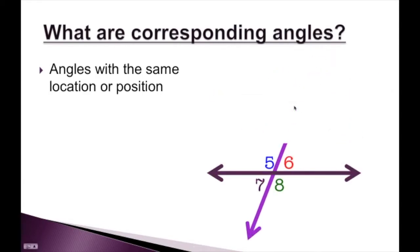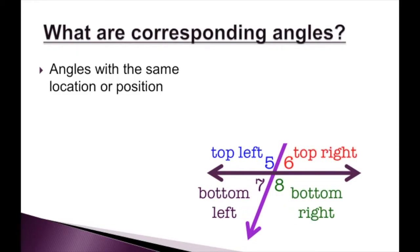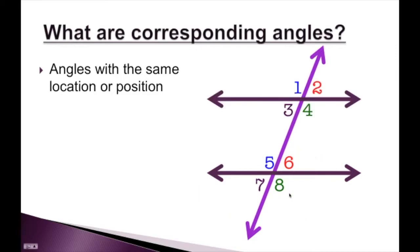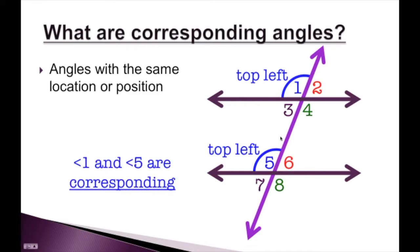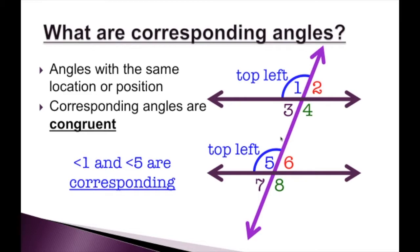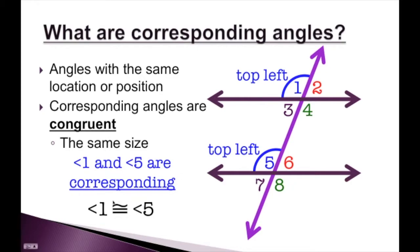Now let's look at the bottom four angles. Angle five is the top left, angle six is the top right, angle seven is the bottom left, and angle eight is the bottom right. Corresponding angles are angles that have the same location or position. So angle one and angle five are both the top left angles for their groups — they are corresponding angles. Corresponding angles are congruent, which means they're the same size. So angle one is congruent to angle five.